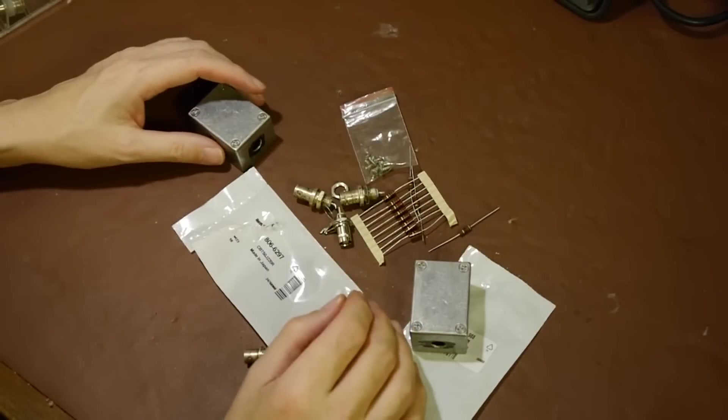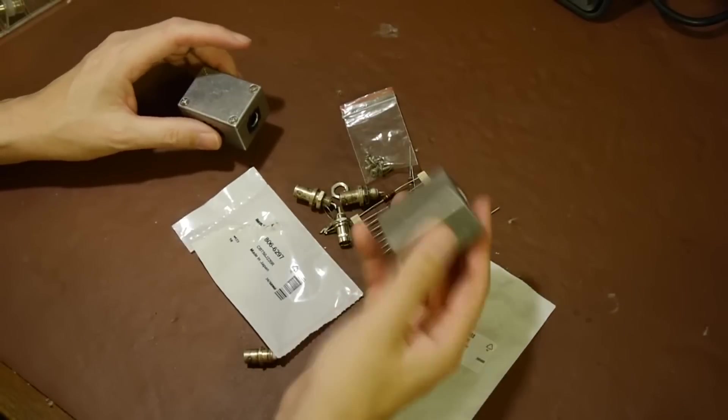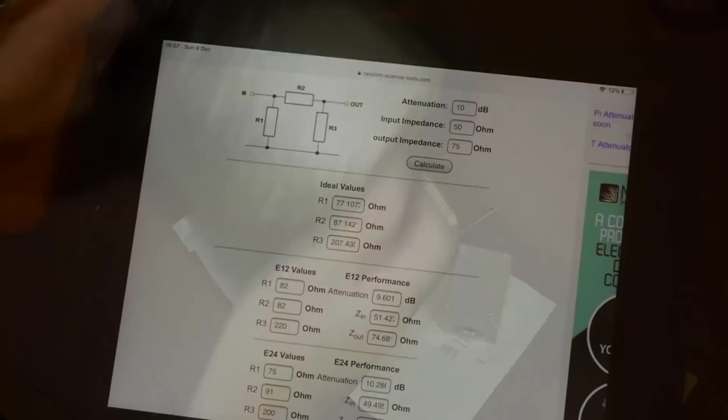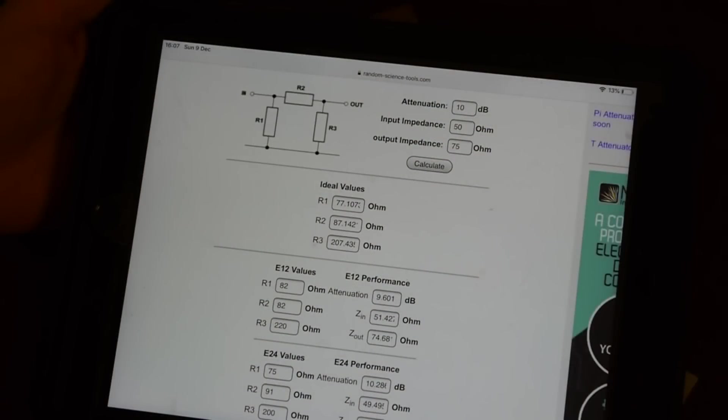But what we bought those resistors for is to make an attenuator or an impedance matching pad. The purpose behind this attenuator is because I want to be able to connect 50 ohm test gear to 75 ohm input impedances. It's quite standard for things like domestic FM radios and even TVs. They tend not to use 50 ohm, typically they'll be 75 ohms.